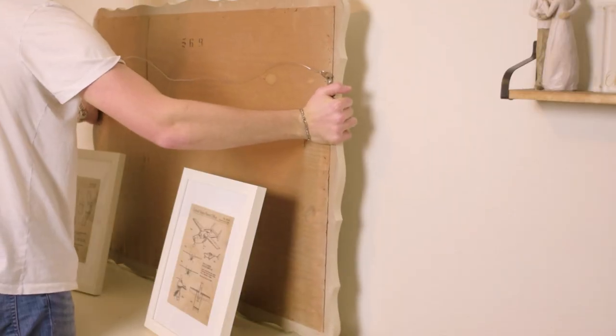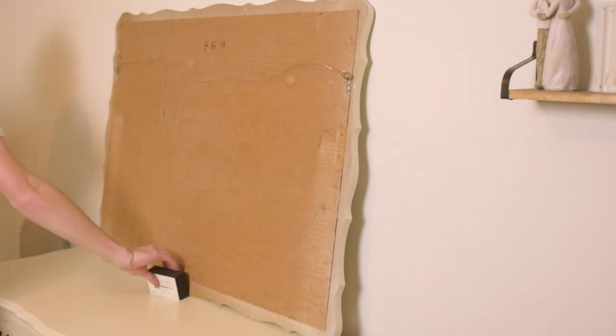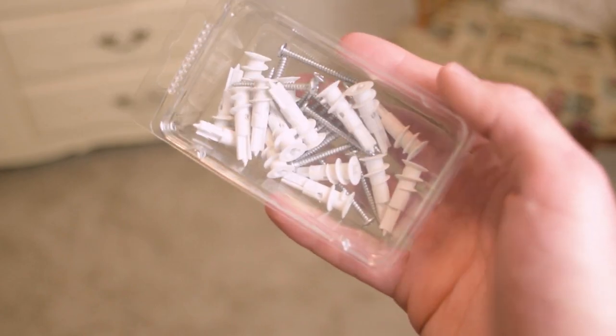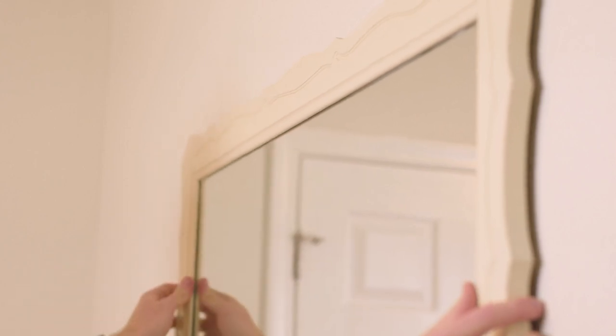Now there's only one thing left to do, and that's to hang this bad boy. Remove all the decorations from the dresser very carefully because your wife is watching, and just find the stud and mark it. If you don't have a stud, you can use one of these drywall anchors. Drive in a screw, hang up the whole thing, and make sure the mirror is nice and straight.